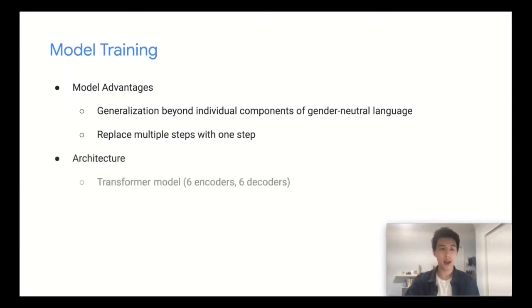For training, we train a standard transformer model with six encoders and six decoders. We also find that data augmentation by adding non-gendered and gender-inflective sentences helps improve performance.